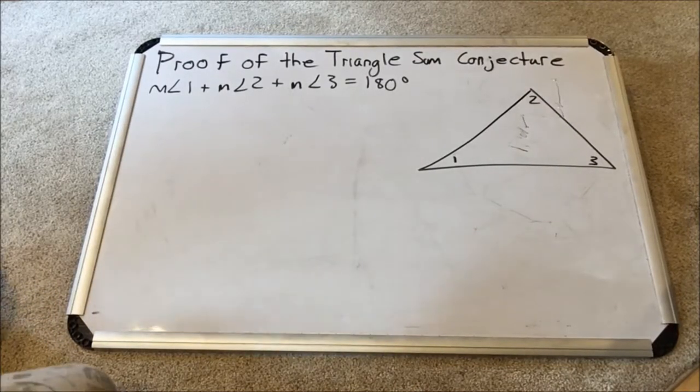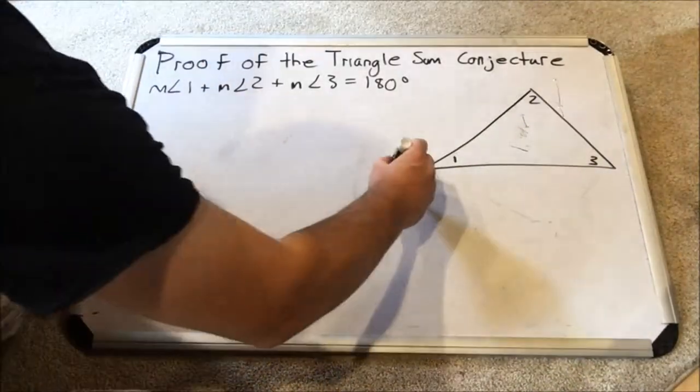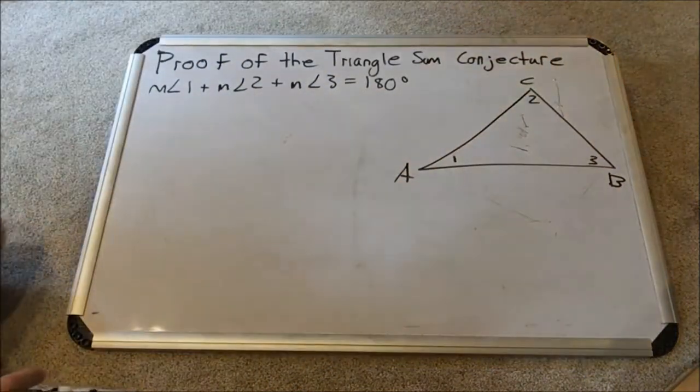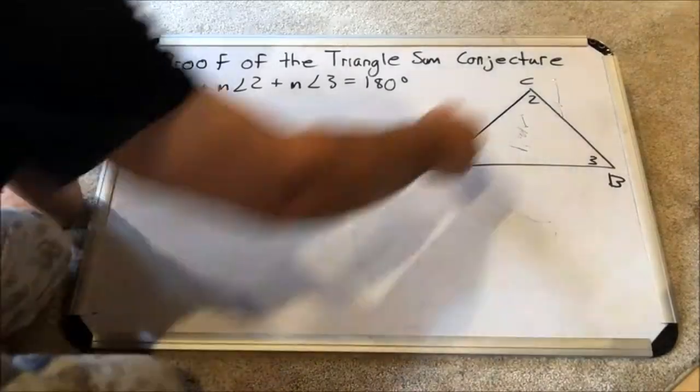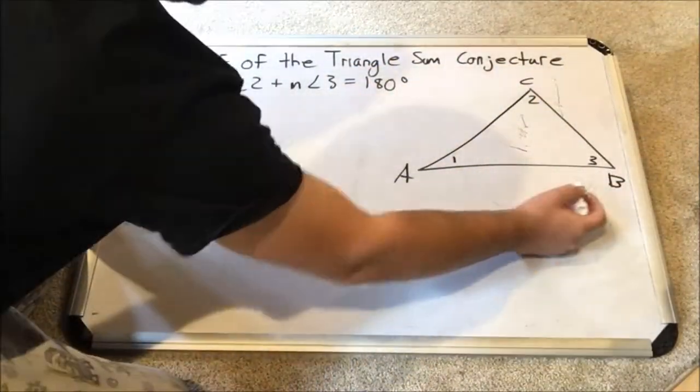Here is how this proof is done. We create a triangle and label the sides and the angles. So here are all the labels. This would be side AC, this would be side CB, and this would be side AB.